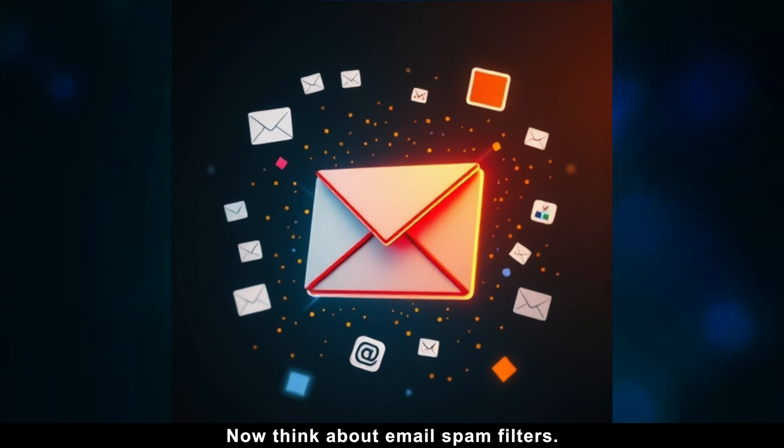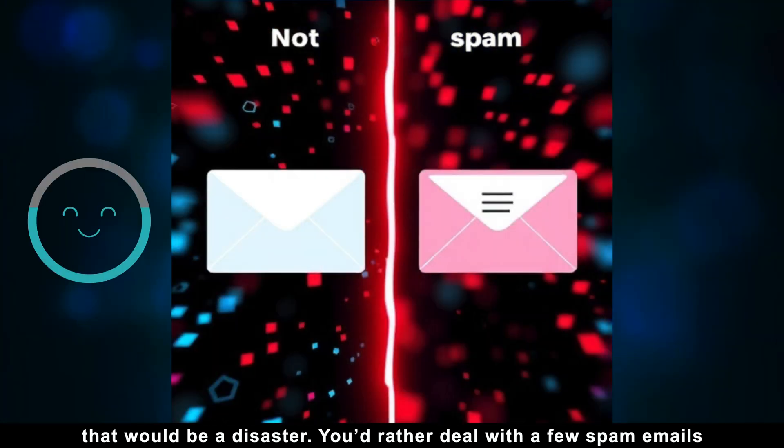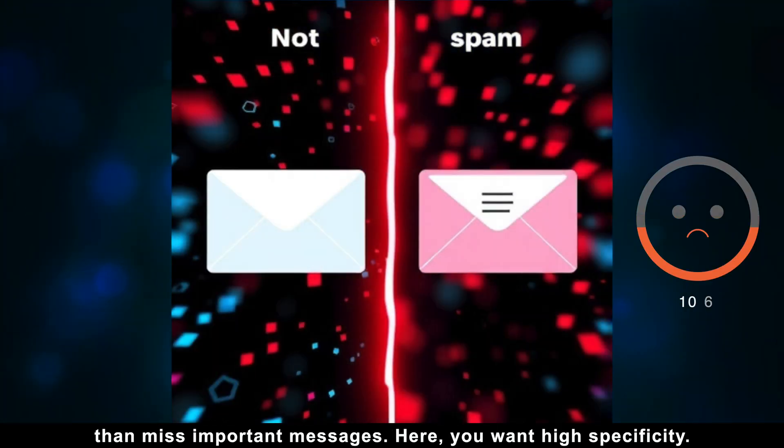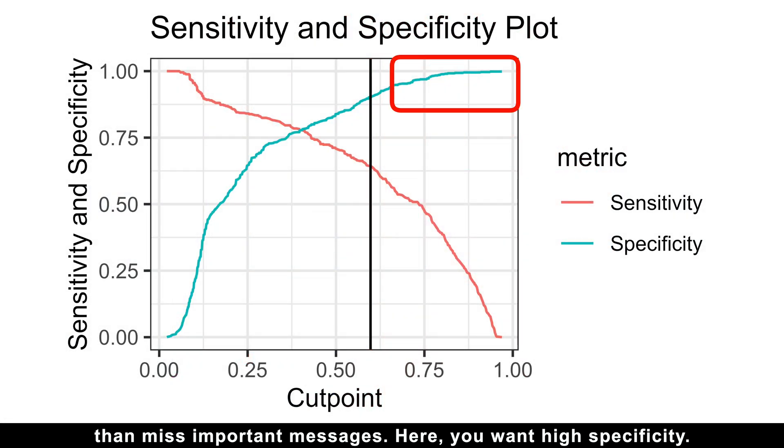Now, think about email spam filters. You don't want it tagging your boss's urgent email as spam. That would be a disaster. You'd rather deal with a few spam emails than miss important messages. So here, you want high specificity.